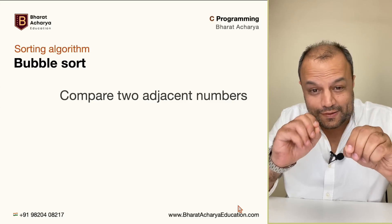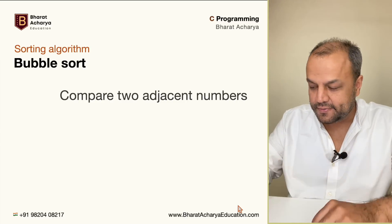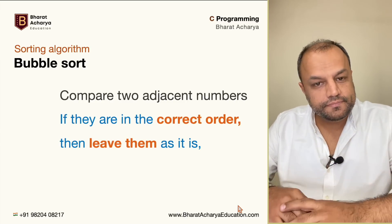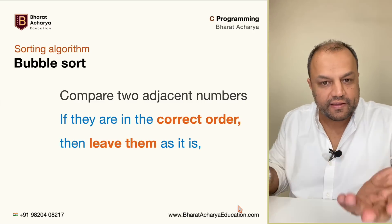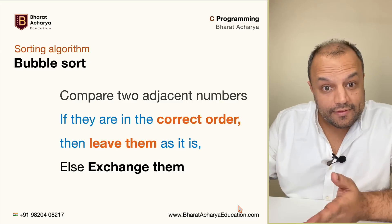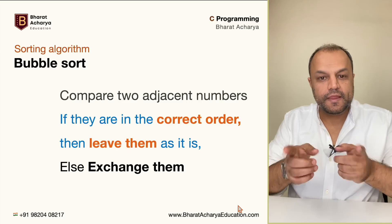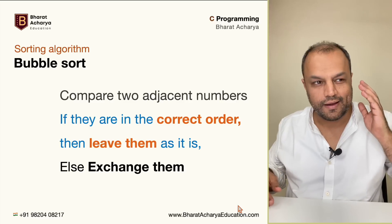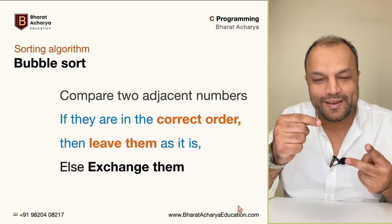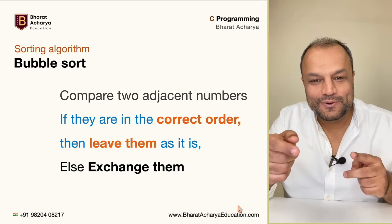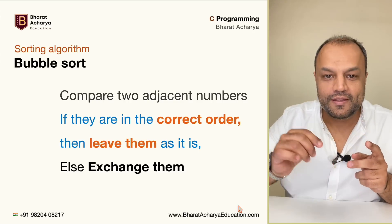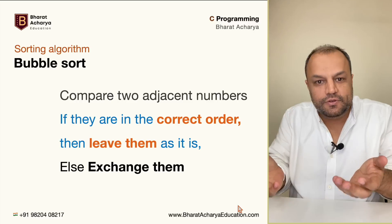Compare two adjacent numbers - like the first and the second, or the second and the third. If they are in the correct order, leave them. For example, if you're sorting ascending and your numbers are four and five, they're already in the correct order - just leave them. If they are not in the correct order, exchange them. To exchange two values, you use a temporary variable: temp equals a, a equals b, b equals temp.